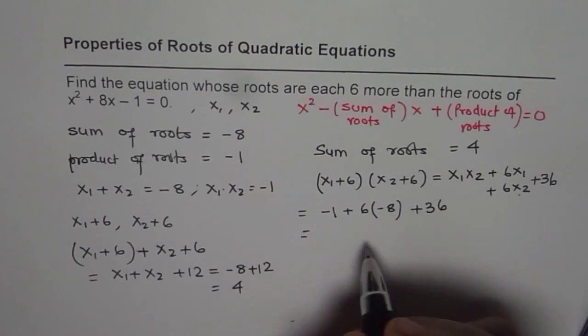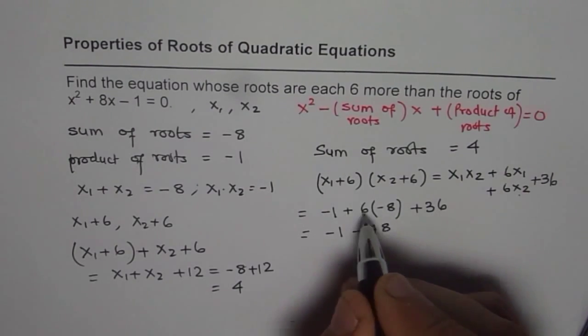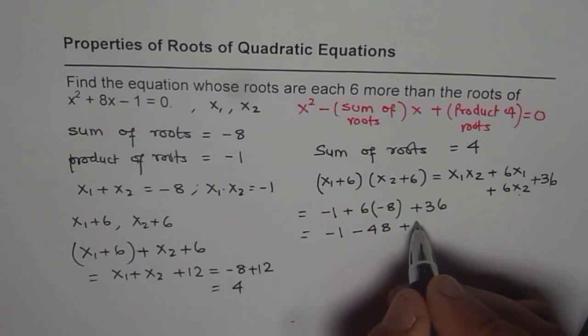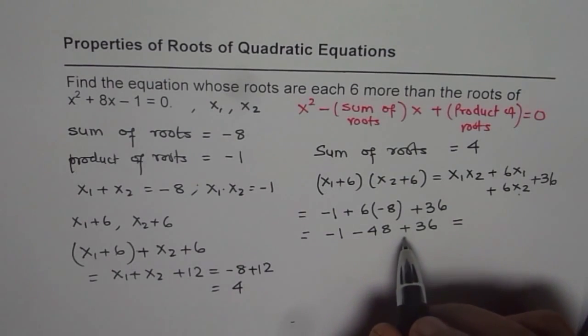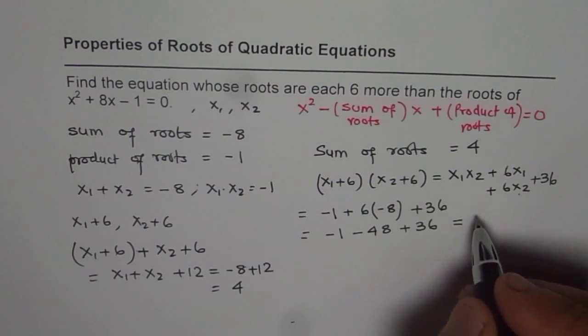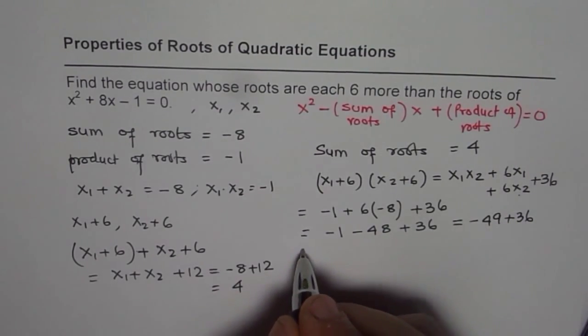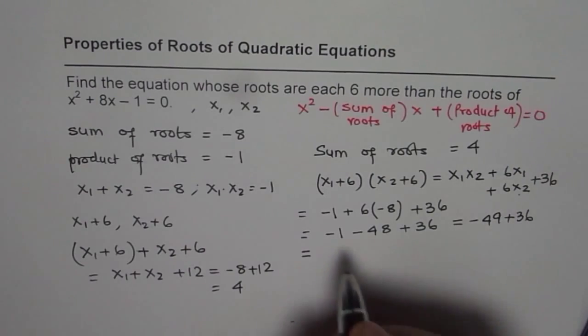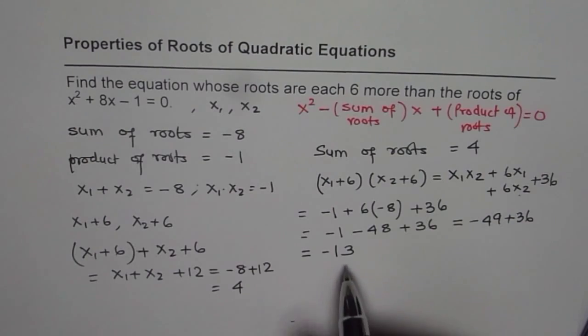So how much is that? So that is -1, 6 times 8 is -48 with the negative sign here plus 36. And that equals 36 - 49. So it is 36 - 49 plus 36 and that gives us -13. So the product is -13 and therefore we can now write down our answer.